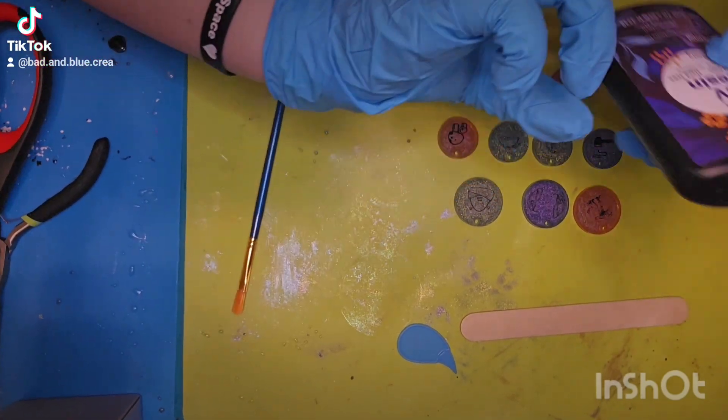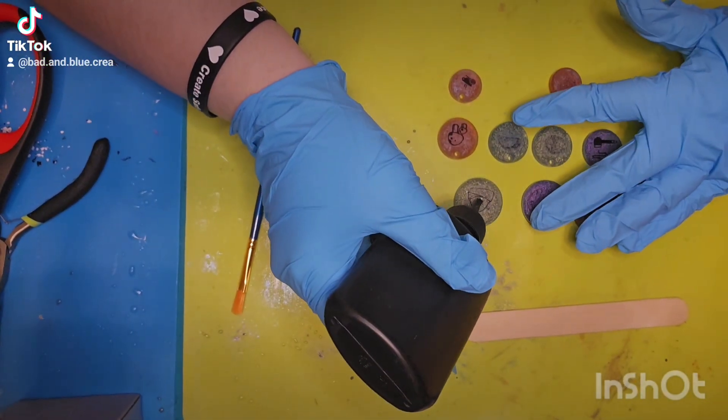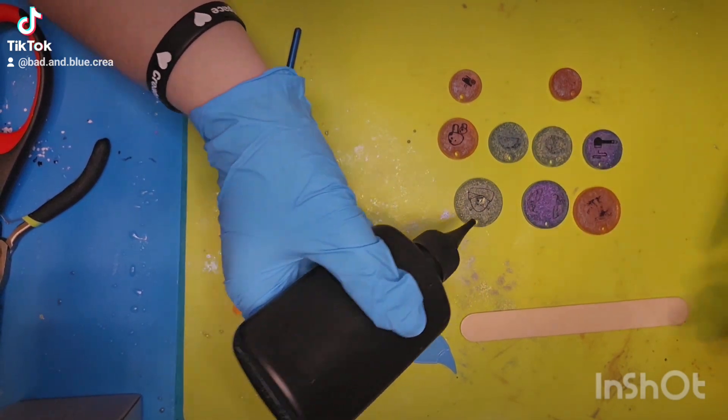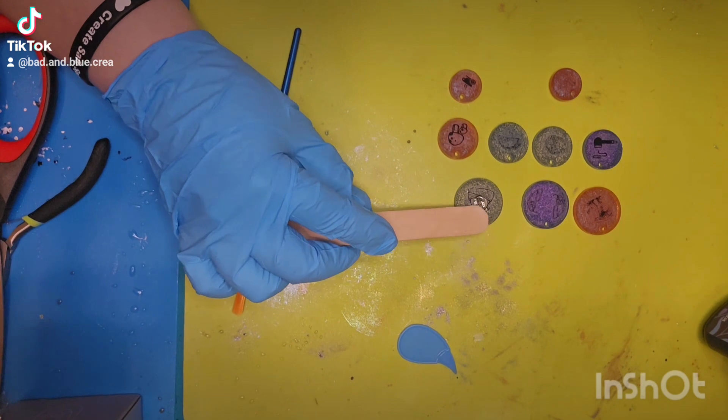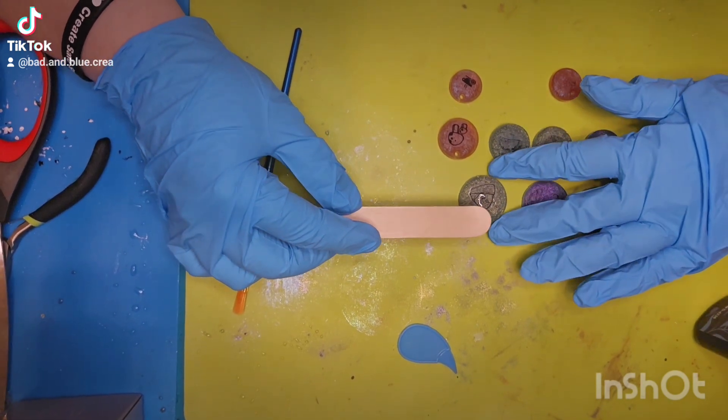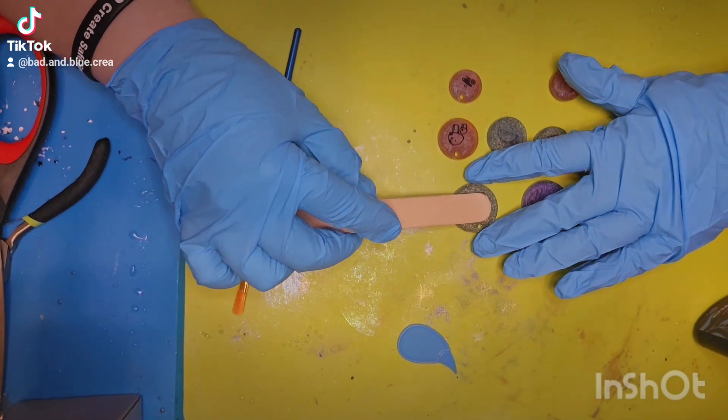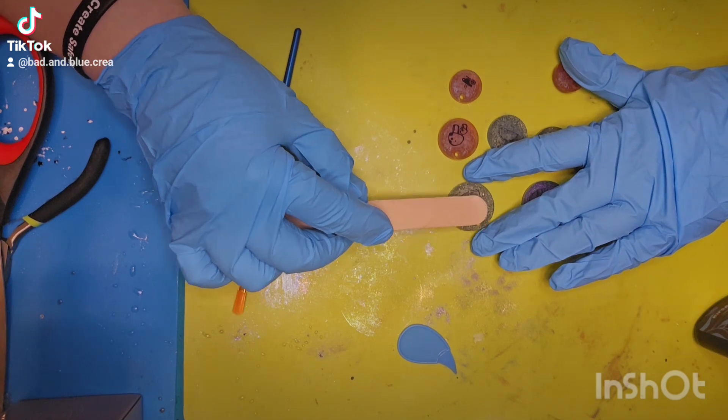What's up crafty crew, so let's finish up these necklaces that we've been making. We did the resin in a couple videos back, we used our sticker printer in the last video, and now we're gonna top them off with a top coat of UV resin to make sure that sticker stays on there and we're gonna turn them into necklaces.